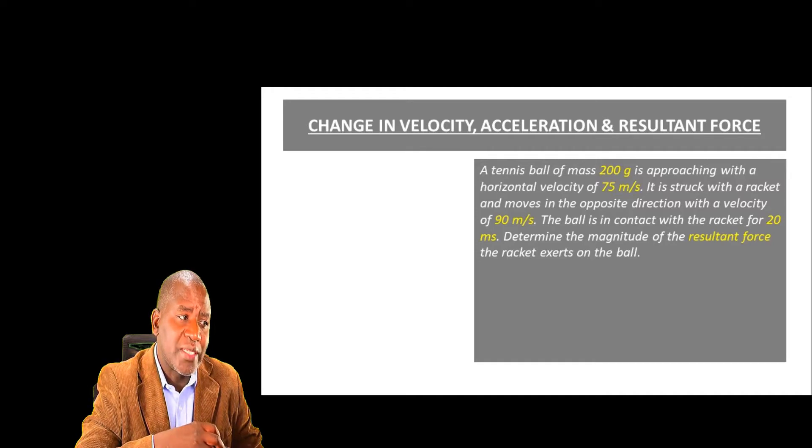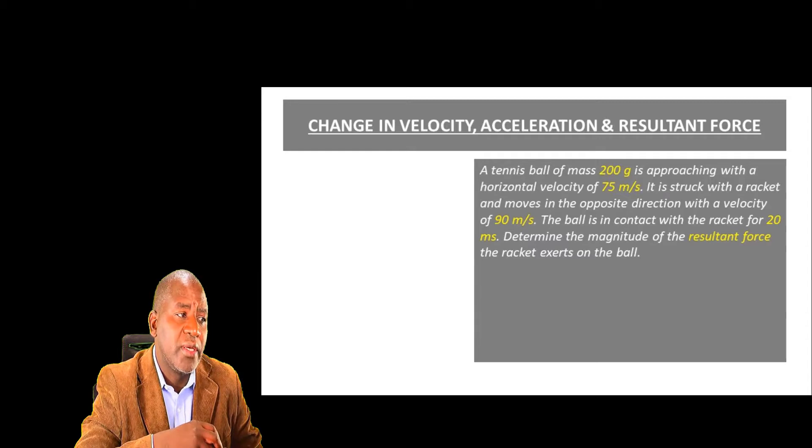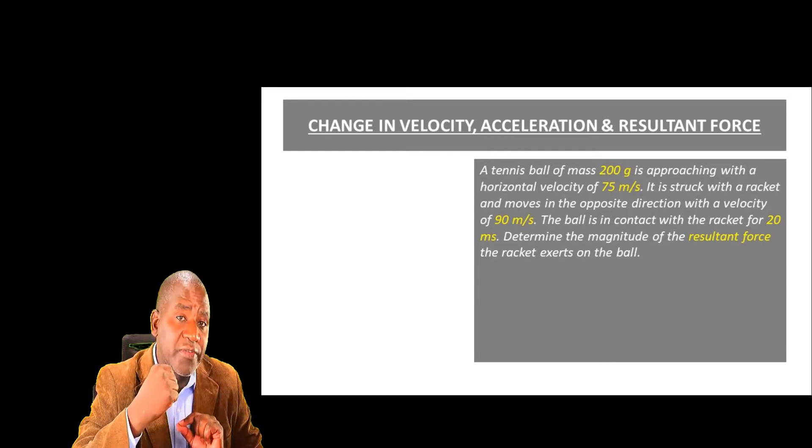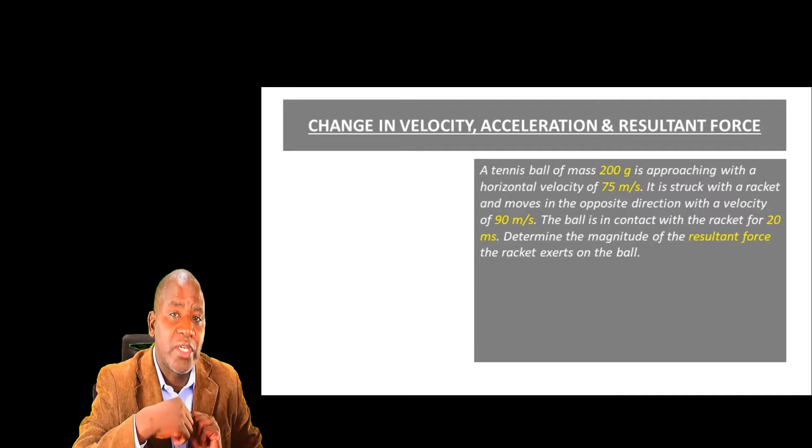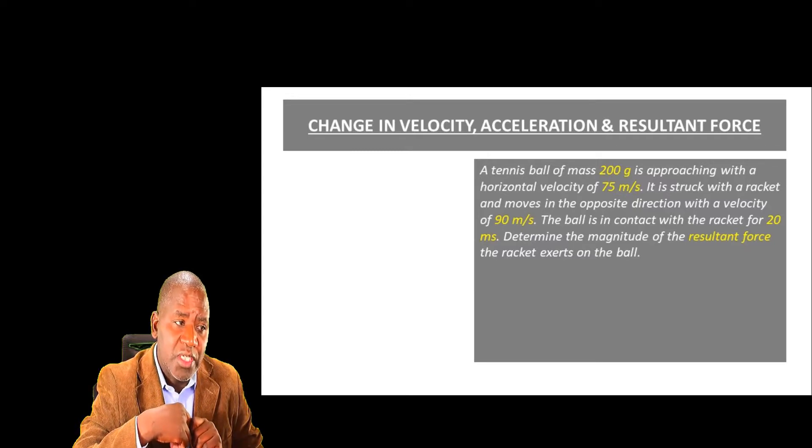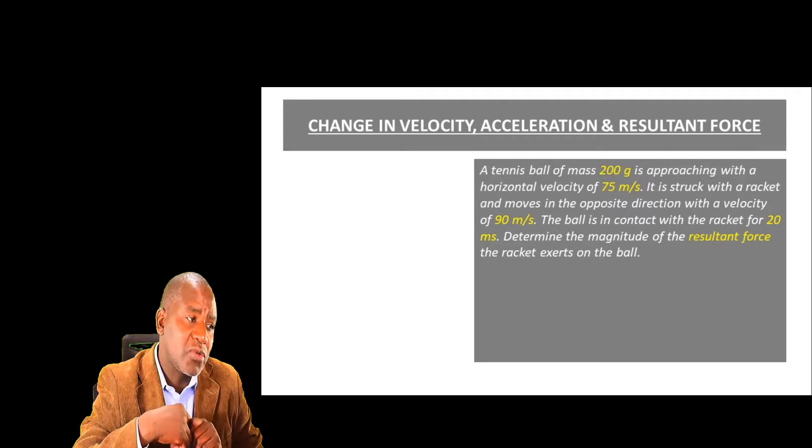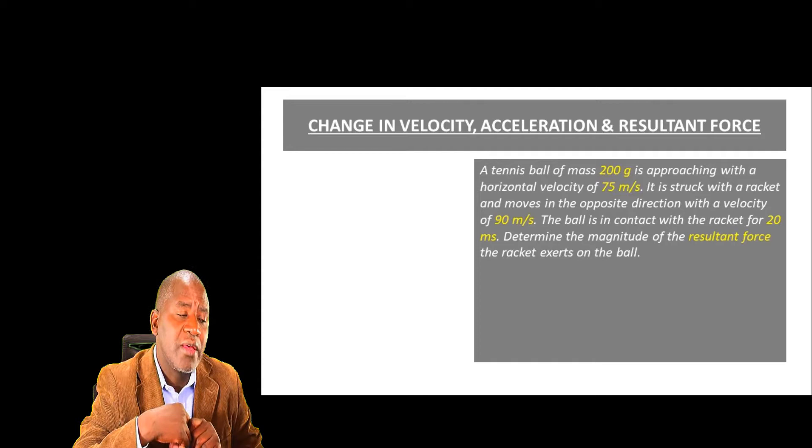In this question you are told that there is a tennis ball of mass 200 grams which is approaching a player with a horizontal velocity of 75 meters per second. It is struck with a racket and moves in the opposite direction with a velocity of 90 meters per second. The ball is in contact with the racket for 20 milliseconds. We are asked to determine the magnitude of the resultant force the racket exerts on the ball.